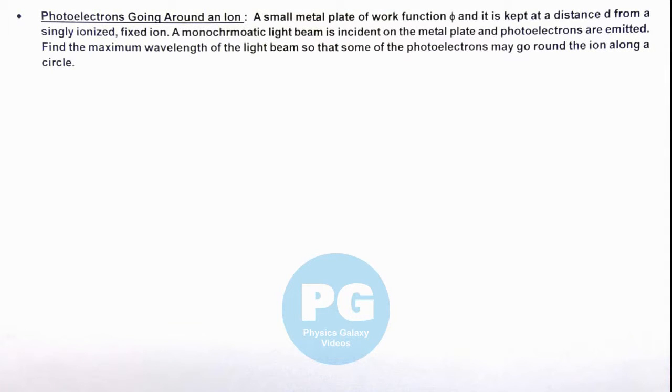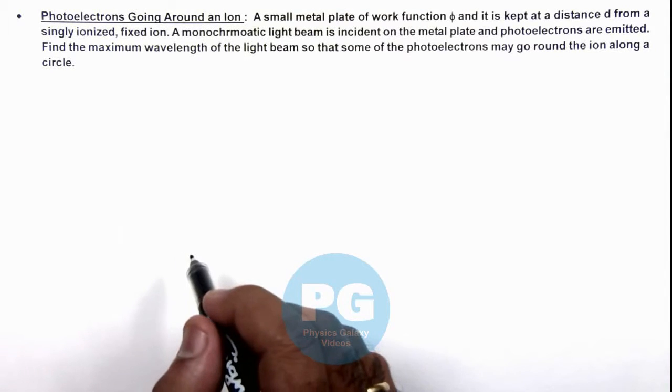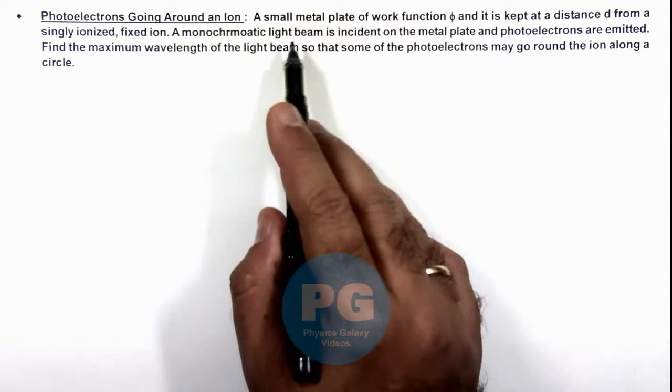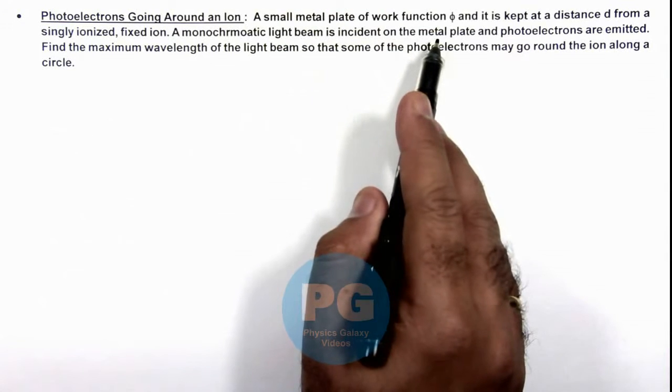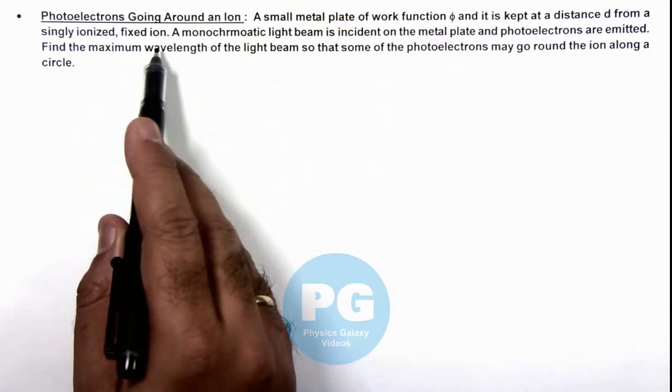This illustration is explaining a situation of photoelectrons going around an ion. Here we are given that a small metal plate of work function phi, and it is kept at a distance d from a singly ionized fixed ion.